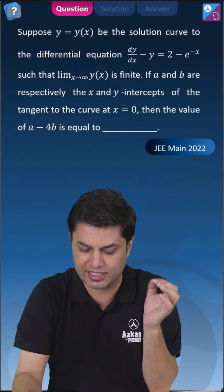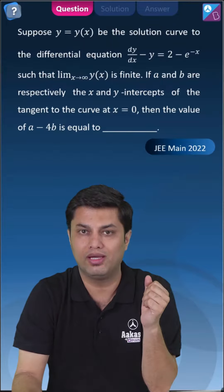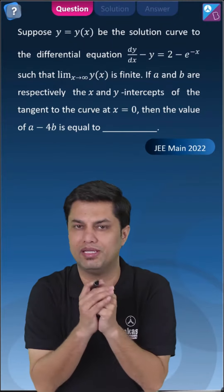If a and b are respectively the x and y intercepts of the tangent to the curve at x equals 0, then the value of a minus 4b is...